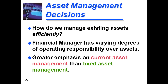The second thing important in asset management is that financial managers have a varying degree of operating responsibility over assets. Financial management definitely manages assets, and the varying degree of operating responsibility means they are responsible for all operations run through those assets. Third, in asset management, there is more emphasis on current asset management instead of fixed asset management.